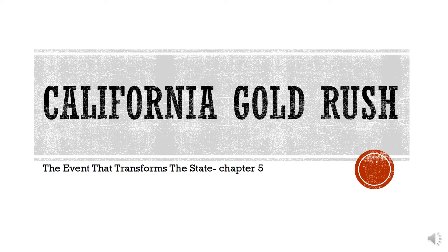San Francisco was the major hub where things would transform very quickly. In 1860 the population was 57,000, and in ten years it had nearly doubled to 150,000. It was a major era of transformation, extremely unique in many ways. This lecture is short, but I want to highlight some of the unique aspects of the California Gold Rush — how strange this phenomenon really was, and how it shapes the state moving forward.